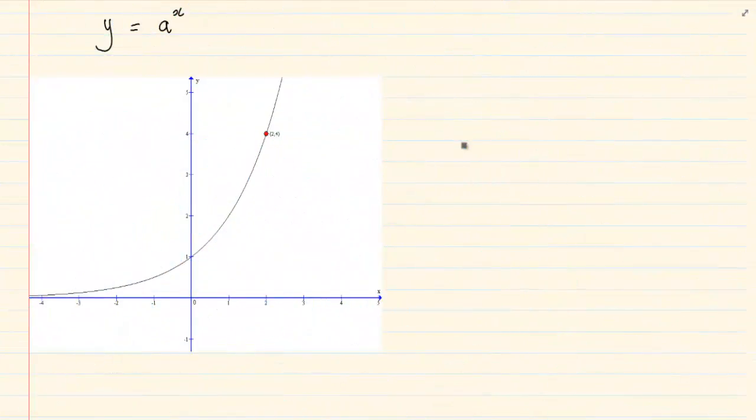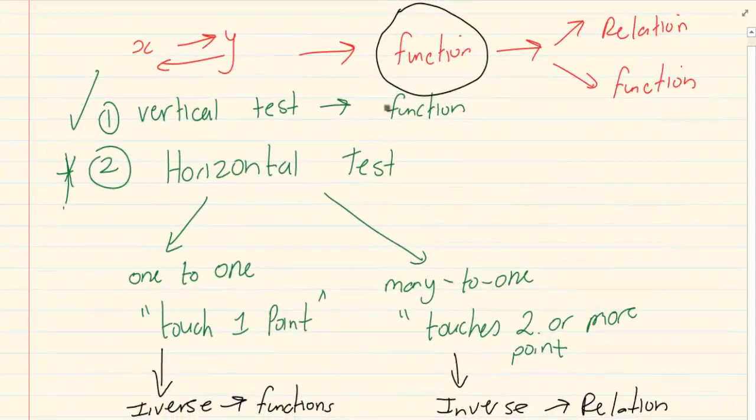Now you have done the inverse of a parabola, you have done the inverse of a straight line graph. If you look at the exponential graph, first we are going to do the vertical test. Now if we do the vertical test, it is a function.